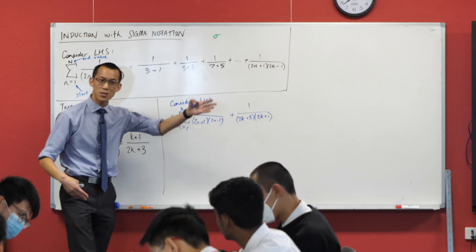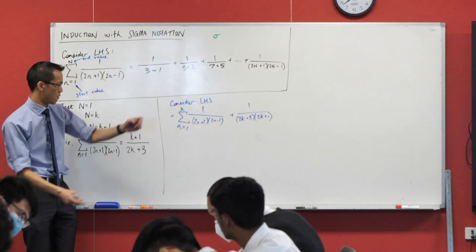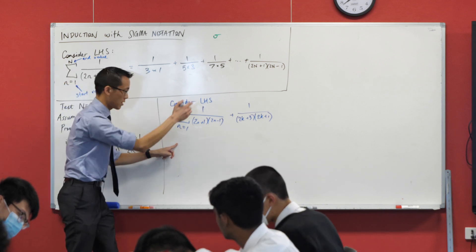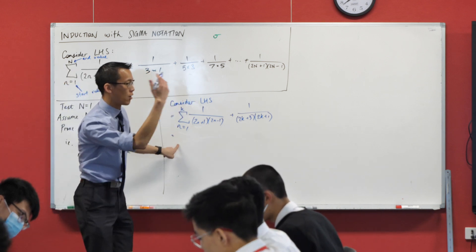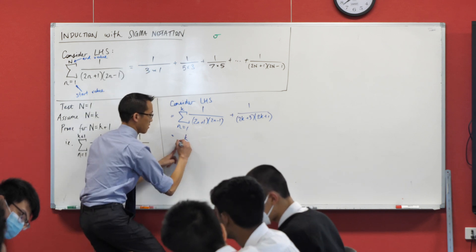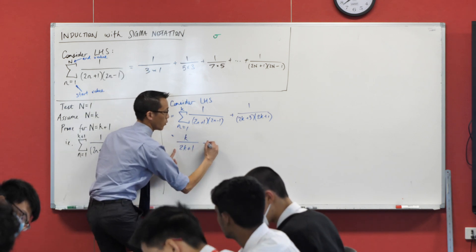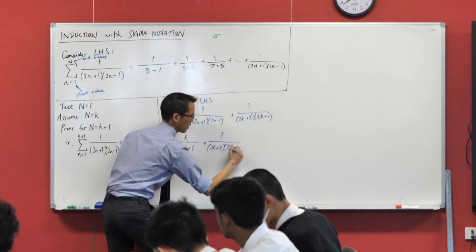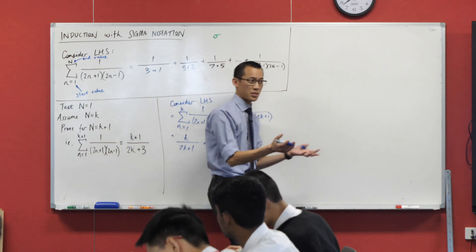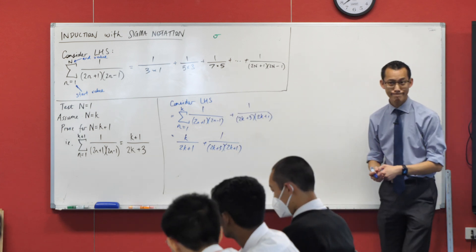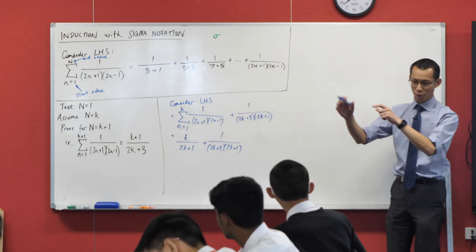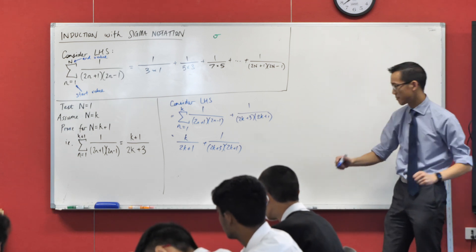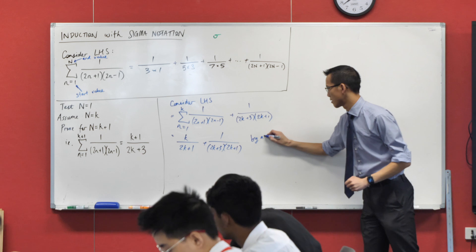Now because I have this assumption over here from my earlier step, this one here, I can just substitute this for my assumption, which I think is k over (2k+1). And of course, we want to say that we're doing that, that we're actually invoking the assumption. So what's our normal phrase for doing that? What do we say? From the inductive hypothesis, by assumption, any of those are fine. I'll just write this because it's the shortest.